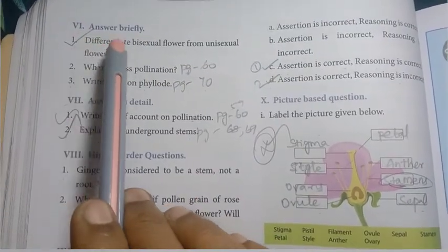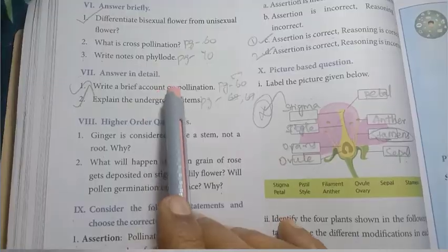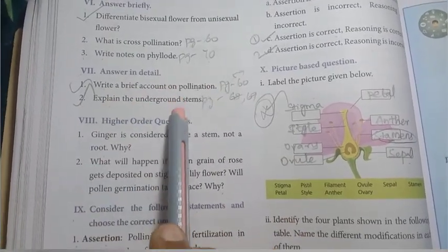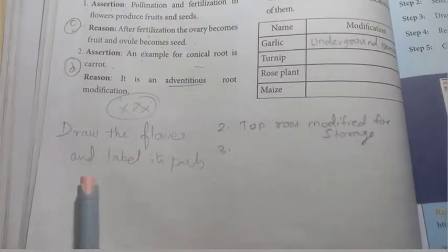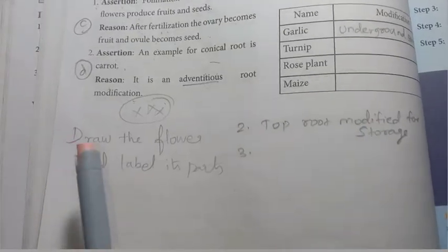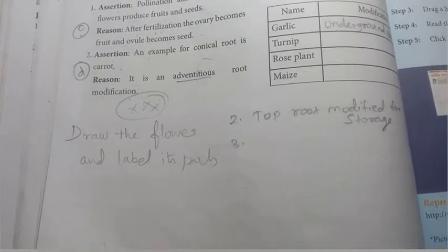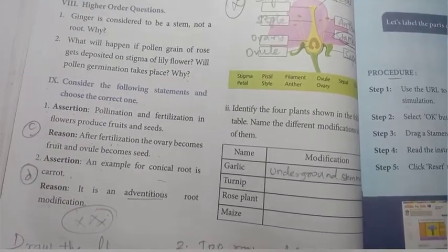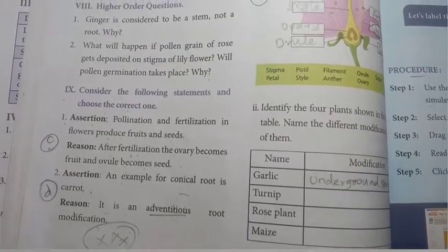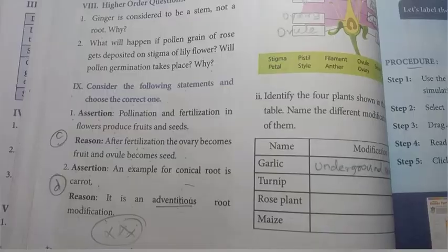Page number 72. Look at Roman number 6, answer briefly. First one, differentiate bisexual flower from unisexual flower, it is very important. Look at the details. Two: write a brief account on pollination. Explain the underground stems. This is the first time you can find the possibilities. Draw the flower and label its parts. This is the first time. Repeat the question: draw the flower and label its parts. This is the important part.